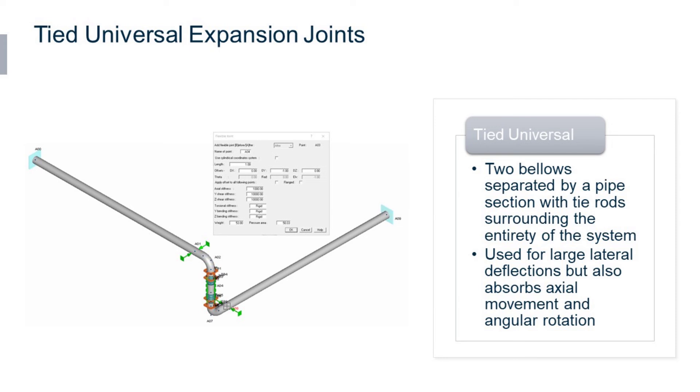In this case the joint assembly absorbs the axial expansion of the long legs as lateral deflection and the tie rods are adjusted to prevent axial expansion in the short leg due to pressure effects.